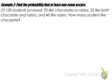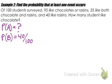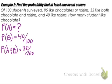In example 2, we're going to work backwards. Of 100 students surveyed, 95 students like chocolate or raisins, 35 like both chocolate and raisins, and 40 like raisins. How many students like chocolate? They give us the 95 people who like chocolate or raisins, 35 of the 100 who like both chocolate and raisins, and the count of just raisins. We don't know the probability of chocolate, but we do know the probability of people liking raisins, both liking chocolate and raisins, and how many of the 100 people like chocolate or raisins.